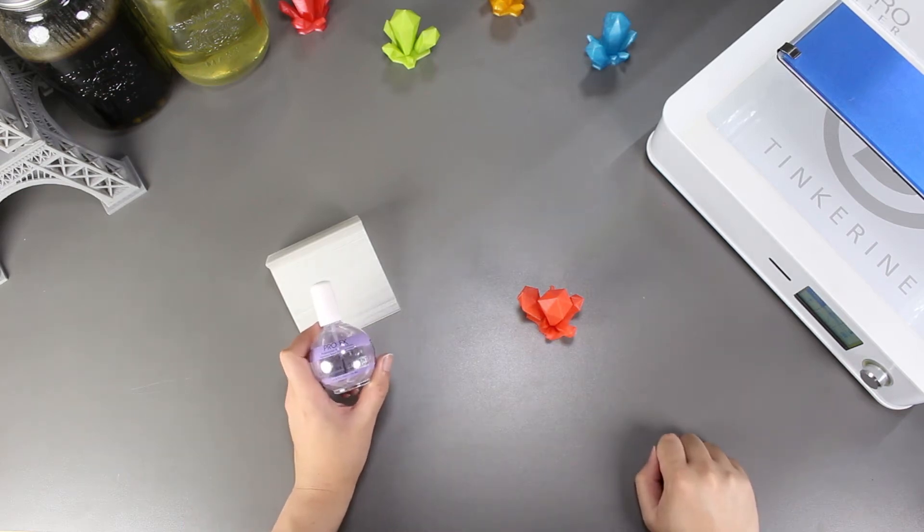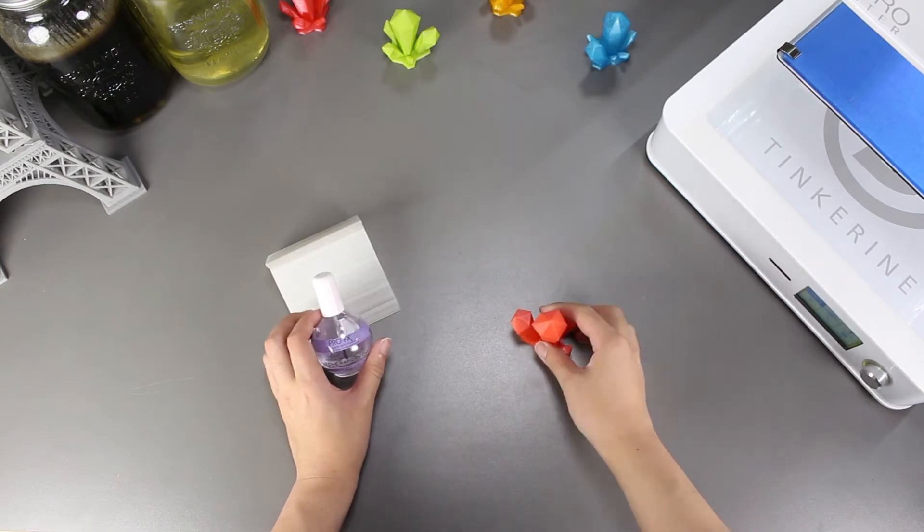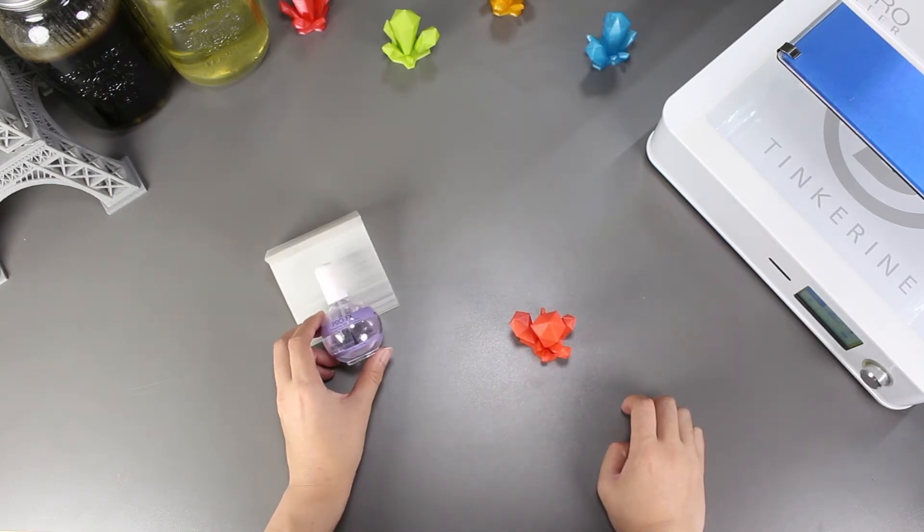Welcome to another episode of Tinkerine Experiments. We are going to try and smooth out our PLA print with this nail polish top coat today.